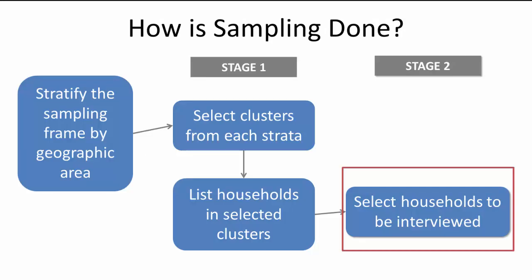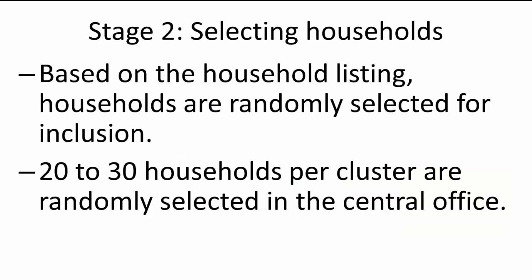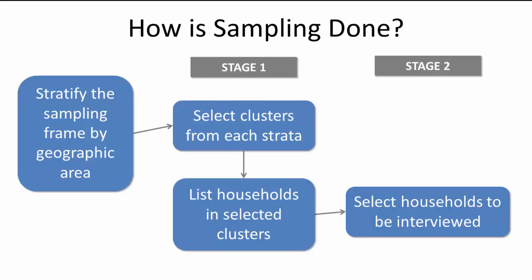For the second stage, the household listings are returned to the implementing agency so households can be selected for interviews in the central office. Based on the household listing, 20 to 30 households are randomly selected from each cluster for inclusion. Households are always randomly selected at the implementing agency, most commonly the central statistical office. This process is important to prevent bias — otherwise, difficult-to-reach households might be excluded from the survey. Additionally, no replacement is allowed during data collection in order to prevent bias.